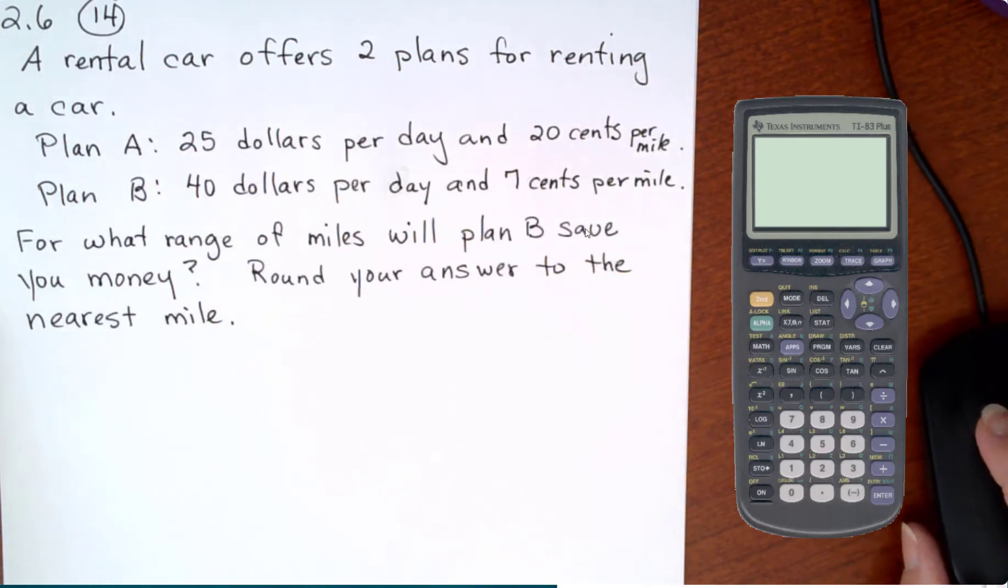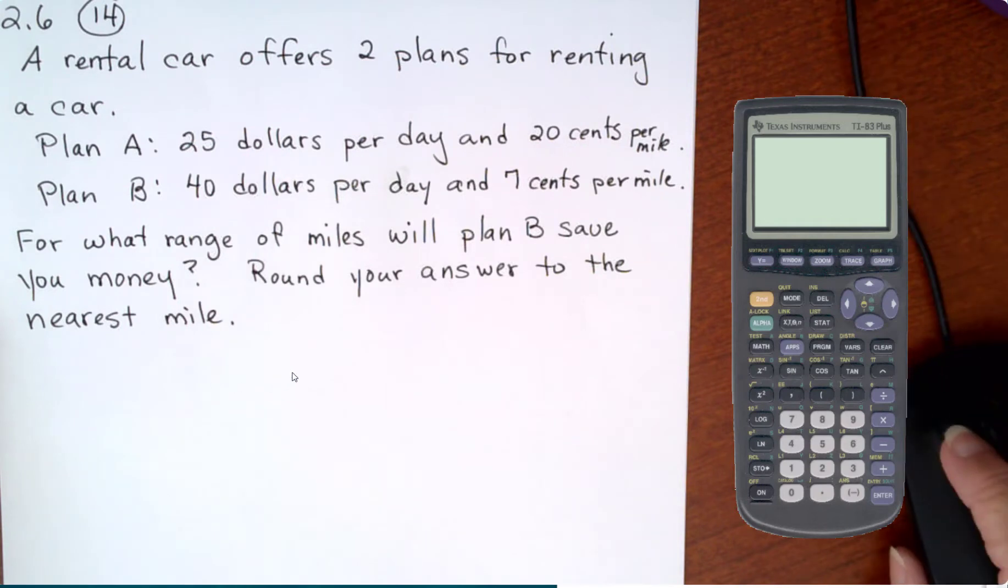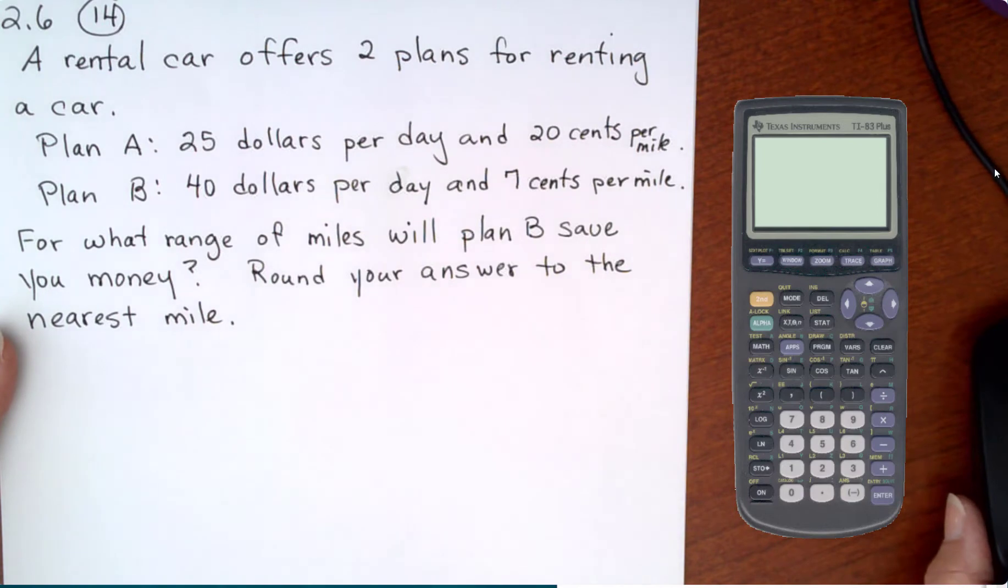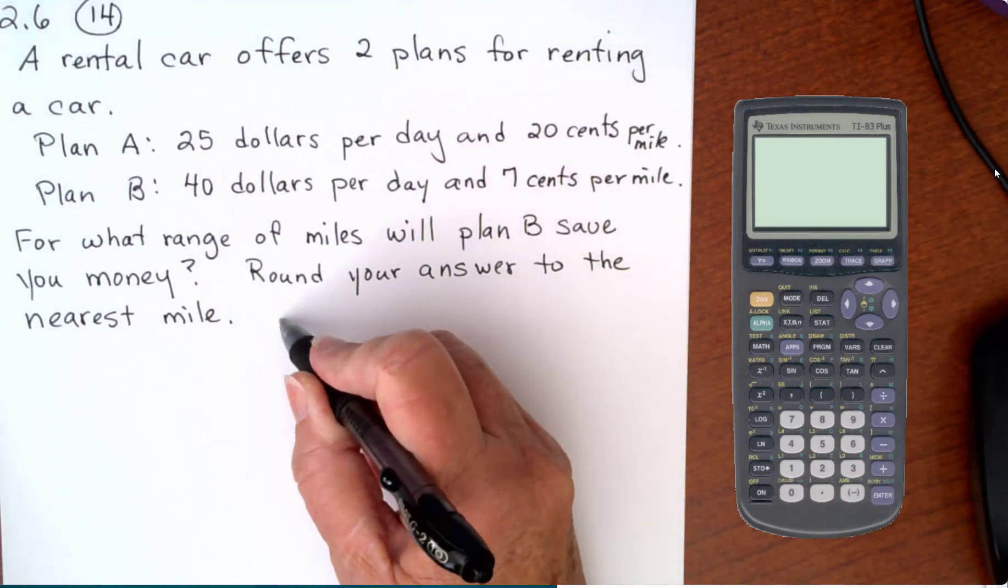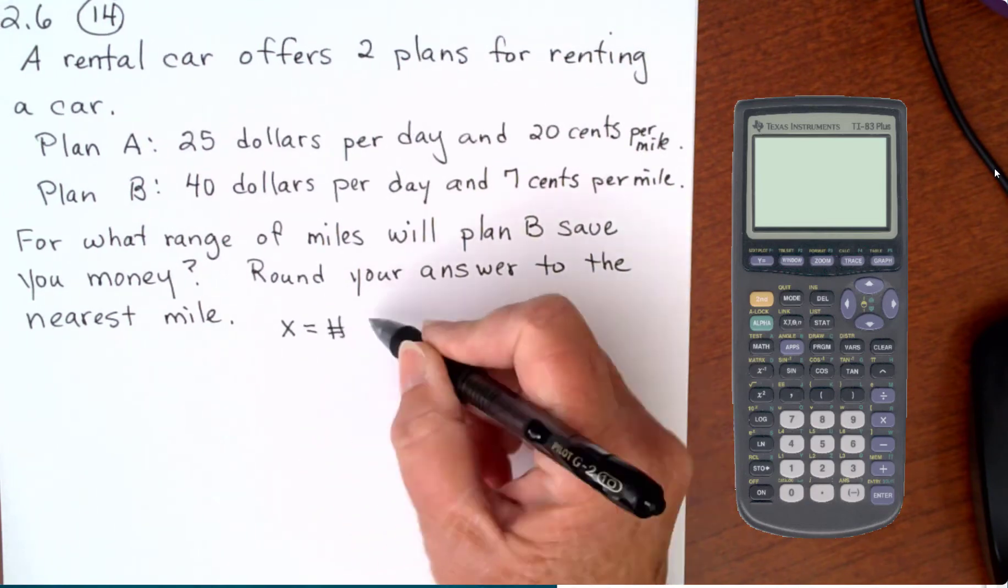So you want Plan B to be less than Plan A. The piece we don't know is how many miles they drive. So that will be our variable. We'll let x equal the number of miles.